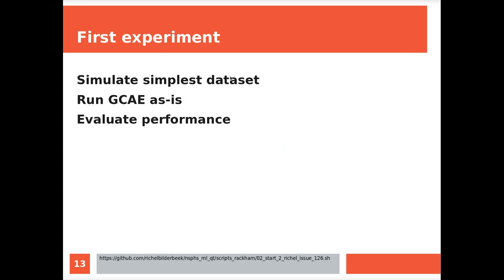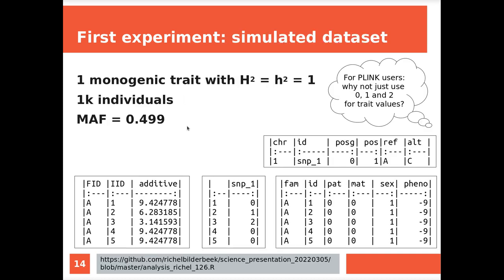What I did is a first simple experiment. I wanted to simulate the simplest possible dataset. I ran GCAE as is, and I evaluated its performance. This was proven to be insightful. So here I've put the full dataset. I simulated one monogenic trait that is fully heritable. So there's no environmental effect at all. I simulated a thousand individuals, and the minor allele had a frequency of 0.4999.